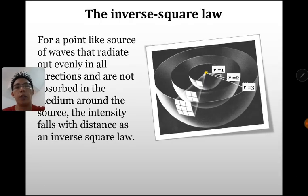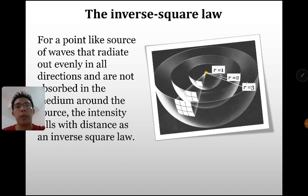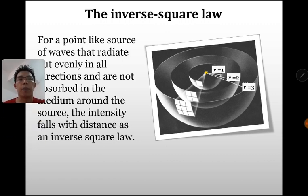Inverse square law. So now we look at, like I mentioned just now, now we look at another quantity that affects this intensity. Imagine that there's a point source like a star in the sky, our sun in the solar system. So it emits the lights to all the directions around it.